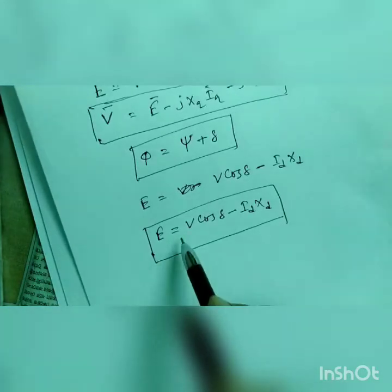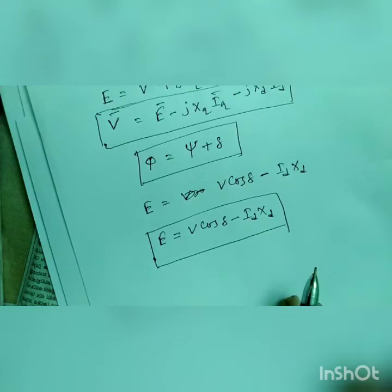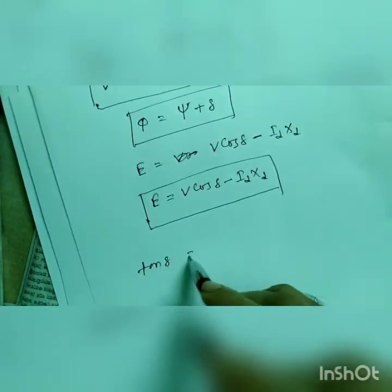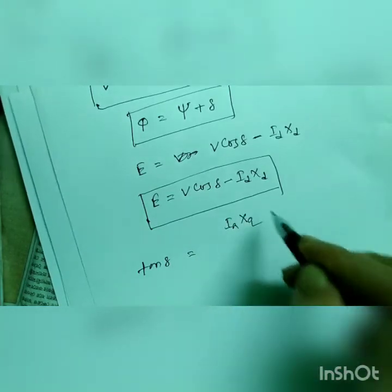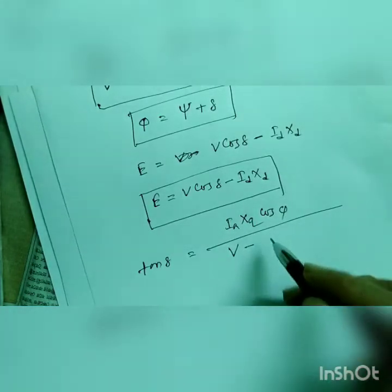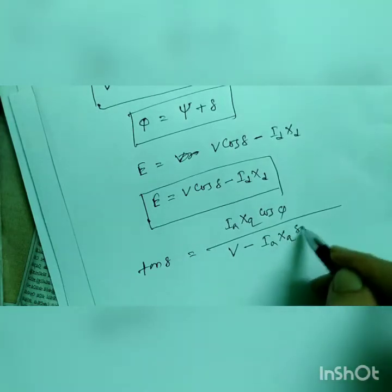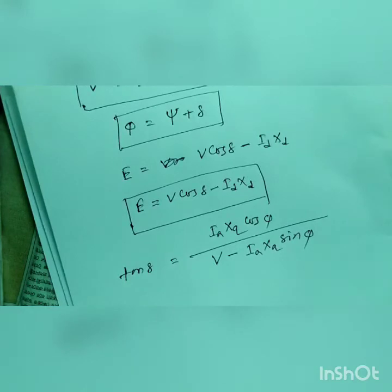So equation is E is equal to v cos delta minus idxd. Similarly you can remember tan delta, which is equal to ia xq cos phi by v minus ia xq sin phi.